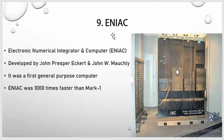Ninth one is ENIAC. ENIAC stands for Electronic Numerical Integrator and Computer. It was developed by John Presper Eckert and John W. Mauchly. It was the first general-purpose computer and it was a thousand times faster than Mark 1.